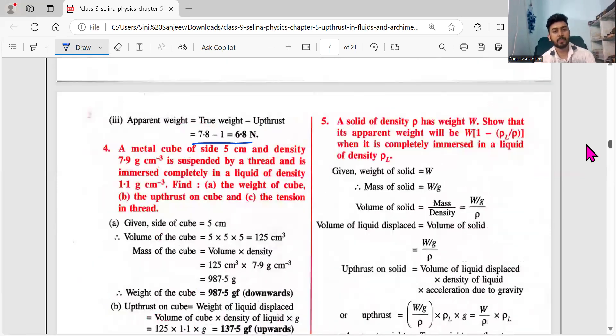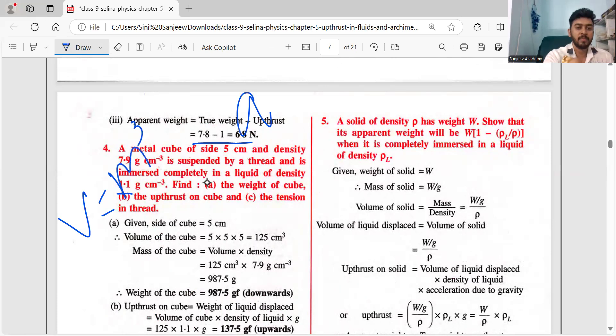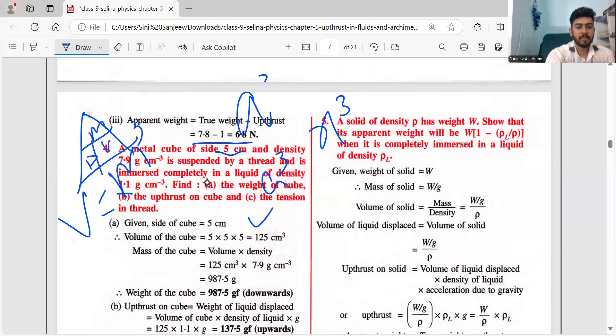Next: A metal cube of side 5 cm and density 7.9 g/cm³ is suspended by a thread and is immersed completely in liquid of density 1.1 g/cm³. Calculate the weight of the cube. Volume of cube is side³, so 5³ = 125 cm³. Draw a triangle - top is mass. Mass is density into volume. First find weight: weight is mass which is density into volume. Volume is 5³, density is 7.9 g/cm³. Gram per centimeter cube means gram by cm³, so you'll be getting in grams. Weight of the cube is 987.5 gf.